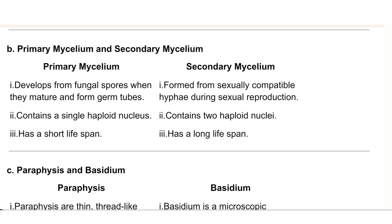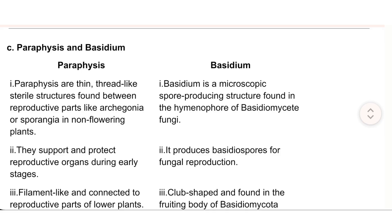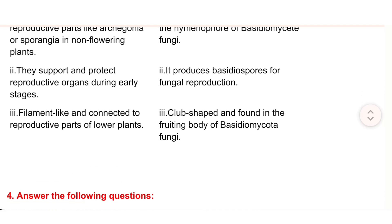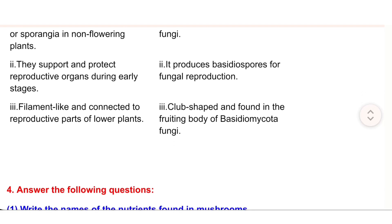(c) Paraphysis and basidium. Paraphysis: thin thread-like sterile structures found between reproductive parts like archegonia or sporangia in non-flowering plants; they support and protect reproductive organs during early stages; filament-like and connected to reproductive parts of lower plants. Basidium: a microscopic spore-producing structure found in the hymenophore of basidiomycete fungi; it produces basidiospores for fungal reproduction; club-shaped and found in the fruiting body of basidiomycota fungi.